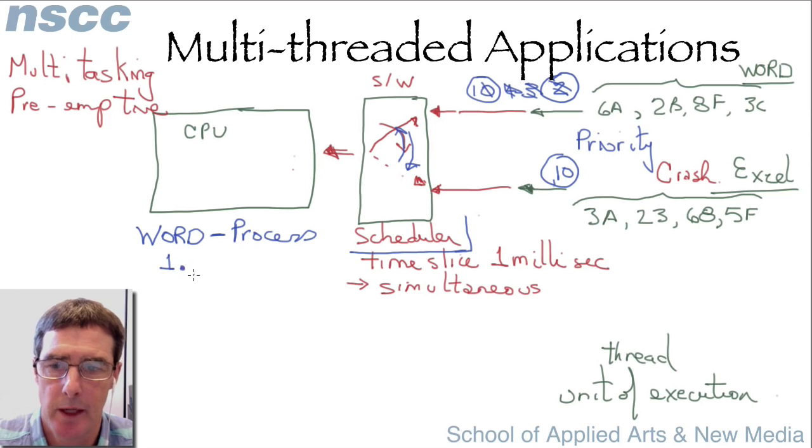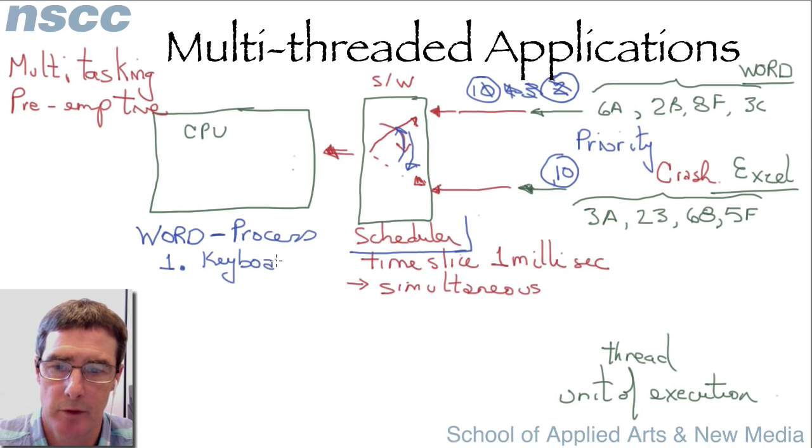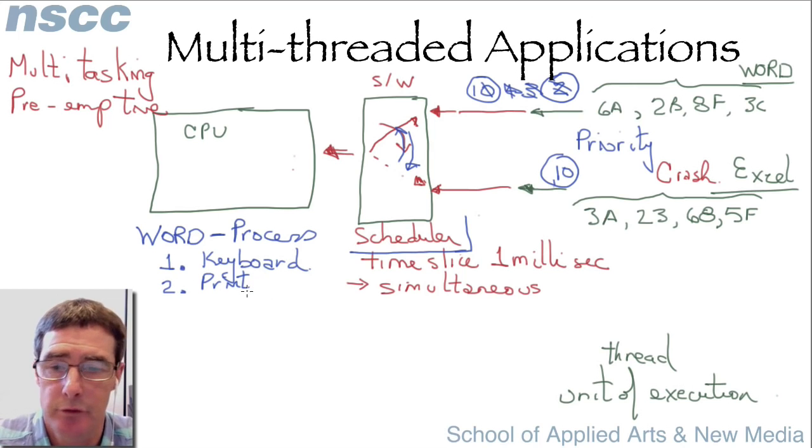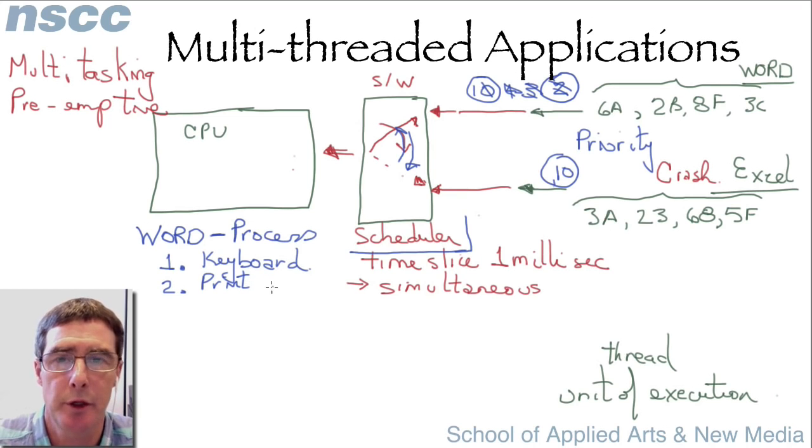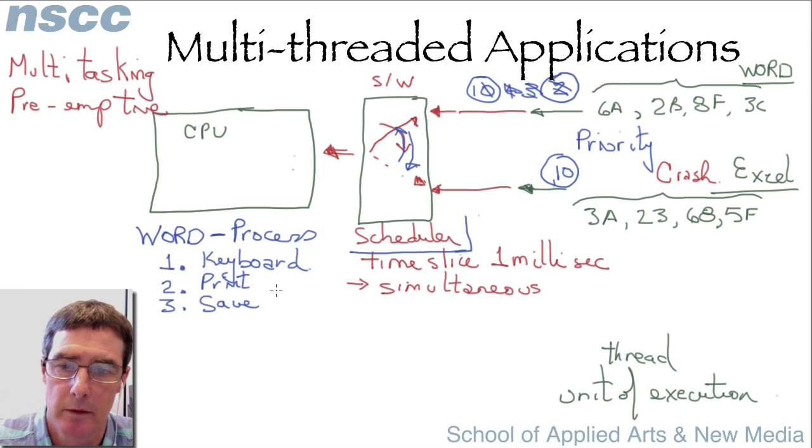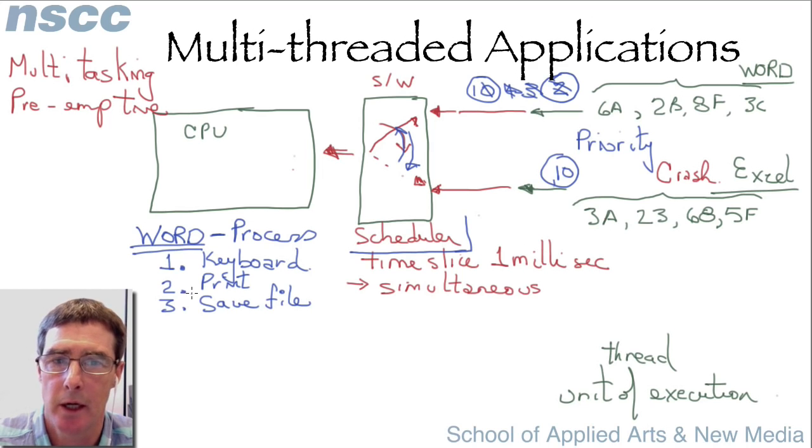So for instance, you may have one thread or unit of execution which is just looking for keyboard input, waiting for the user to type something and then putting it on a screen. Maybe you've hit the print key or the print function, but when the print function happens, you don't want to wait for that print to be completed. You're going to get control back to your word processing program. So another thread is spawned, another bunch of instructions are sent or created and sent to the CPU which take care of printing in the background. You may want to save a file. That can spawn another thread. So most applications today are multi-threaded.